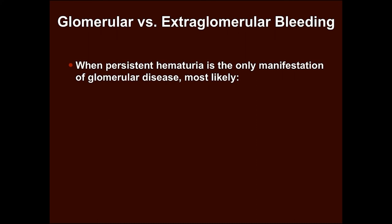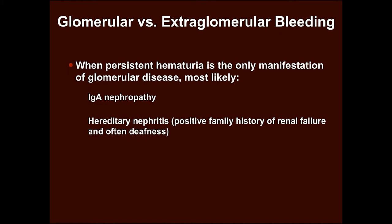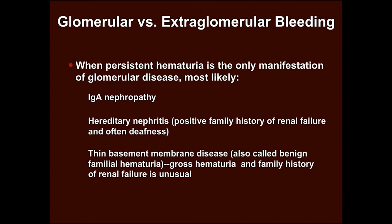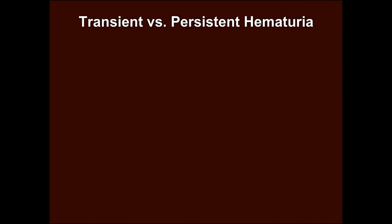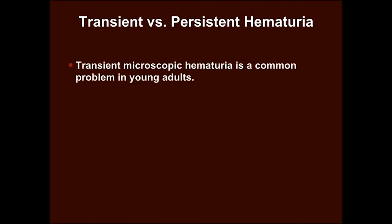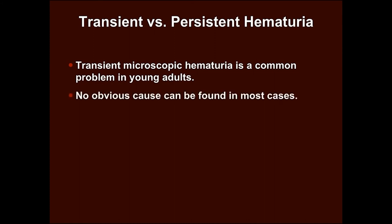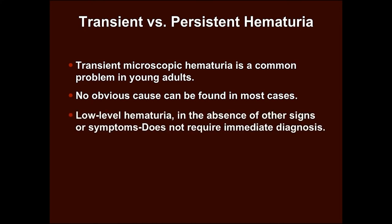When persistent hematuria is the only manifestation of glomerular disease, it is most likely due to IgA nephropathy, hereditary nephritis (often associated with positive family history of renal failure and often deafness), or thin basement membrane disease, also called benign familial hematuria. Transient microscopic hematuria is a common problem in young adults and no obvious cause can be found in most cases. Low level hematuria in the absence of other signs or symptoms does not require immediate diagnosis; it would be reasonable to repeat urinalysis in a few days.